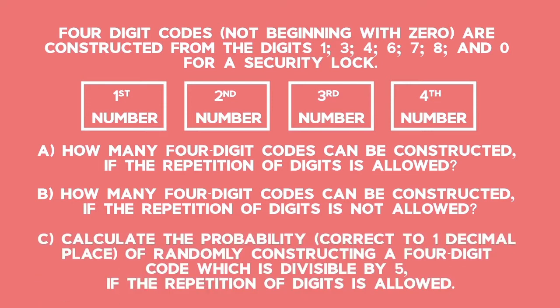And C: Calculate the probability, correct to one decimal place, of randomly constructing a four-digit code which is divisible by 5 if the repetition of digits is allowed.